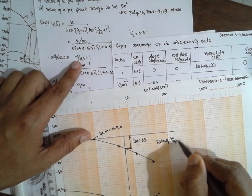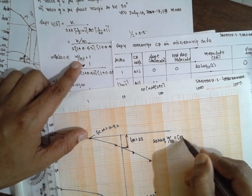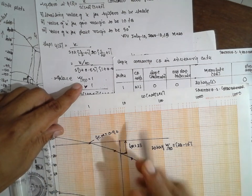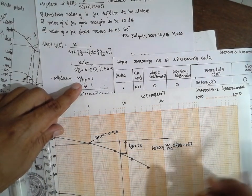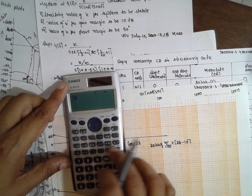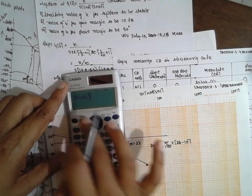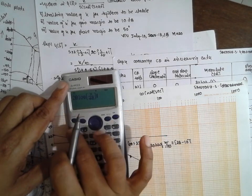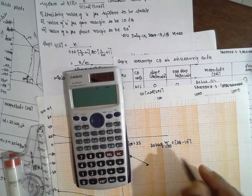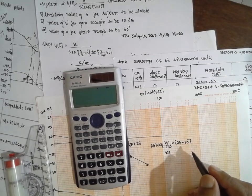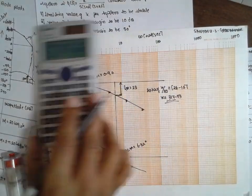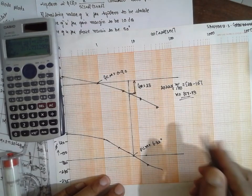To find K for gain margin of 10 dB: the formula is 20 log(K/40) equals 28 minus 10. Using the calculator: 20 log(alpha X divided by 40), set equal to 28 minus 10, shift-solve. The K value will be 317.32. This is the K value for the gain margin specification.